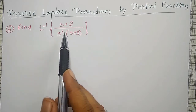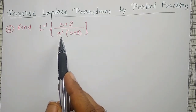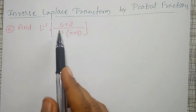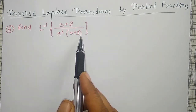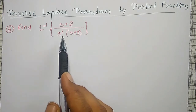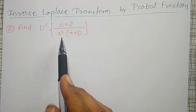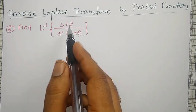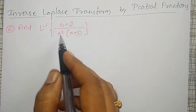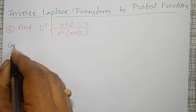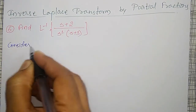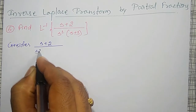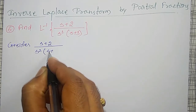Find the Inverse Laplace Transform of (s+2) divided by s² into (s+3). The addition of terms is not there; the denominators are in standard forms, but it is a product of two terms. So I have to split them. Let me find the partial fractions of s+2 divided by s² into (s+3).